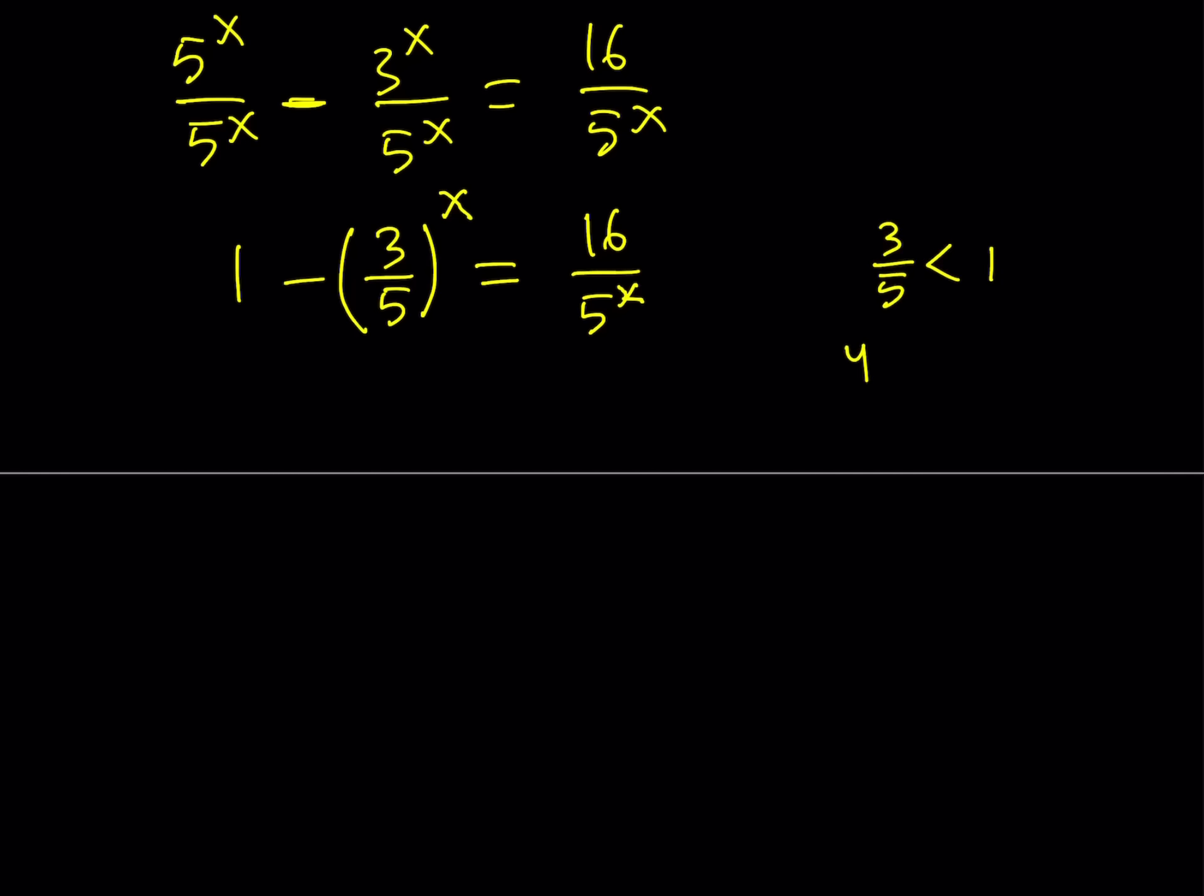If you have an exponential function y equals b to the power x and b is less than 1, then you're talking about a decreasing function. If b is greater than 1, then it's increasing. Obviously we want b to be positive. So if b is between 0 and 1, then our function is decreasing. If b is greater than 1, then it's going to be increasing.